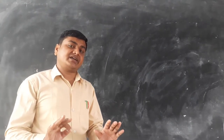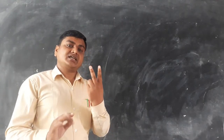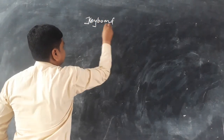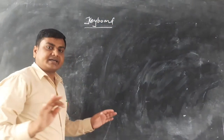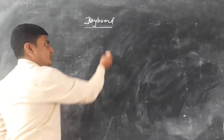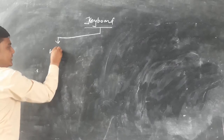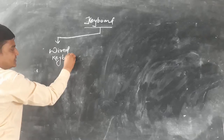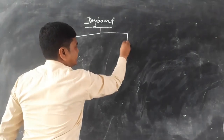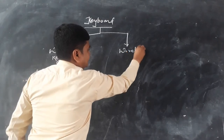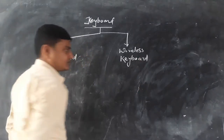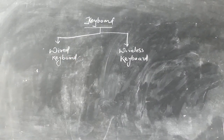Keyboard has been divided majorly into two categories. The first category is known as wired keyboard and the other one is wireless keyboard.